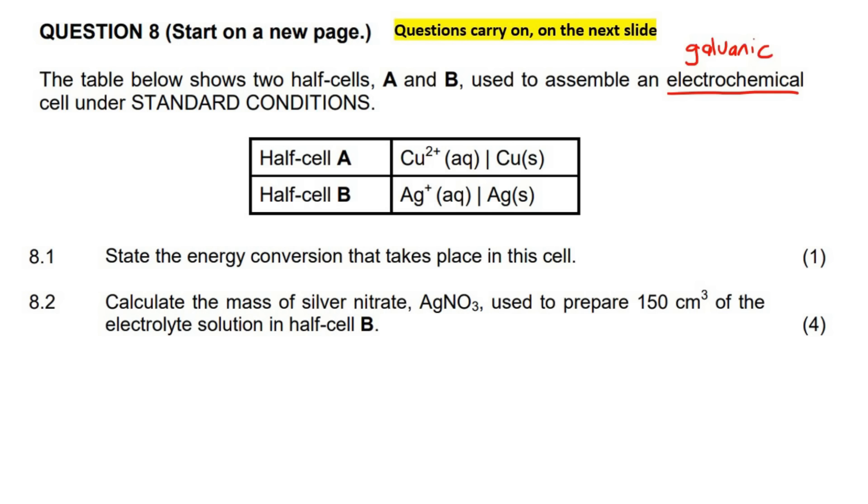So we should know that a galvanic cell takes chemical energy and then converts it into electrical energy. If it was an electrolytic cell, then it would be the opposite. Then you would start with the battery, which is the electrical, and then you would convert that into chemical.